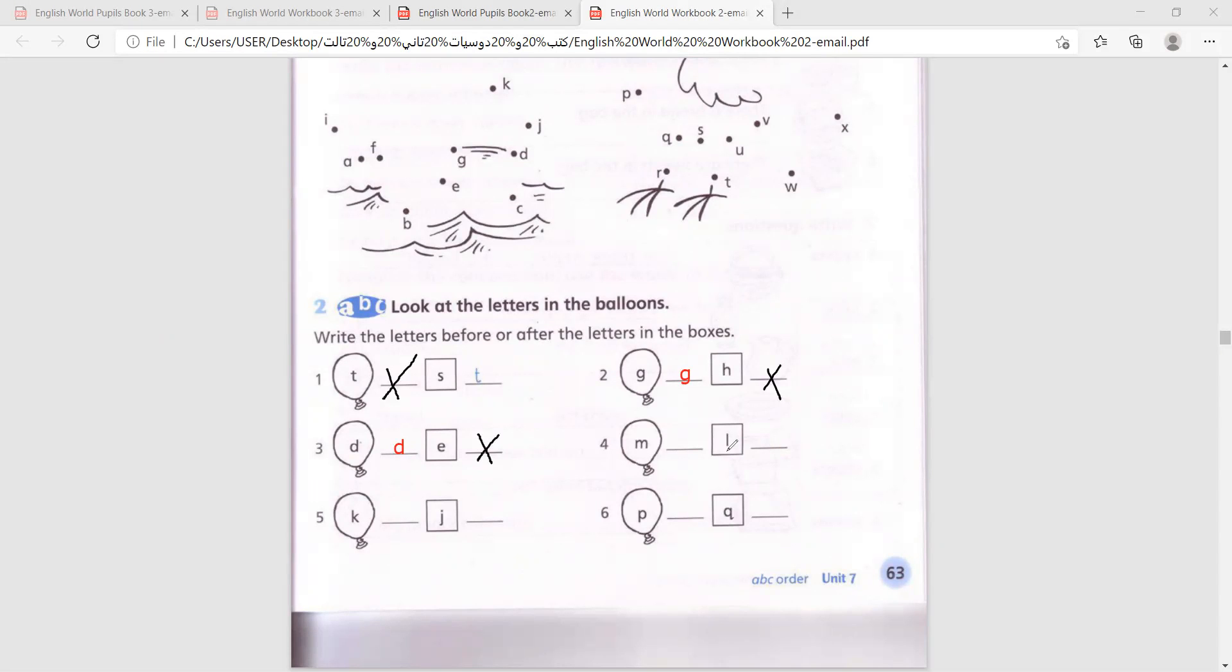Number four, M and L. A, B, C, D, E, F, G, H, I, J, K, L, M. So L before M, so we would write M here. And the other one is done. Number five, J and K. H, I, J, K. J and then K, so we would write K here. And the other one will remain empty.